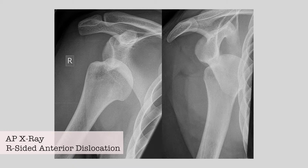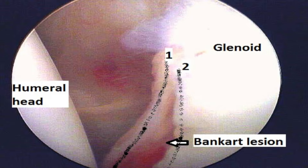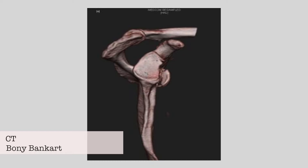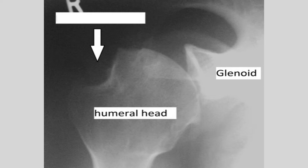In 80% of anterior dislocations, there is a Bankart lesion — a tear of the glenoid labrum along the inferior surface. Sometimes there is associated bone loss, in which case we call it a bony Bankart lesion. In 40% of cases, the impact of the glenoid rim on the humeral head causes a depression in the cortex, called a Hill-Sachs lesion.